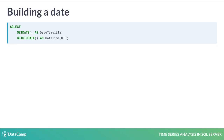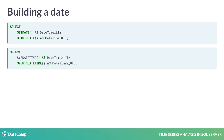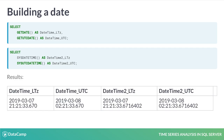First, getDate and getUtcDate will return a date, in local or UTC time respectively, as a DateTime data type. Similarly, sysDateTime and sysUtcDateTime return the current time, either local or UTC, as a DateTime2 typed response. In both cases, we get the dates and times we expect.